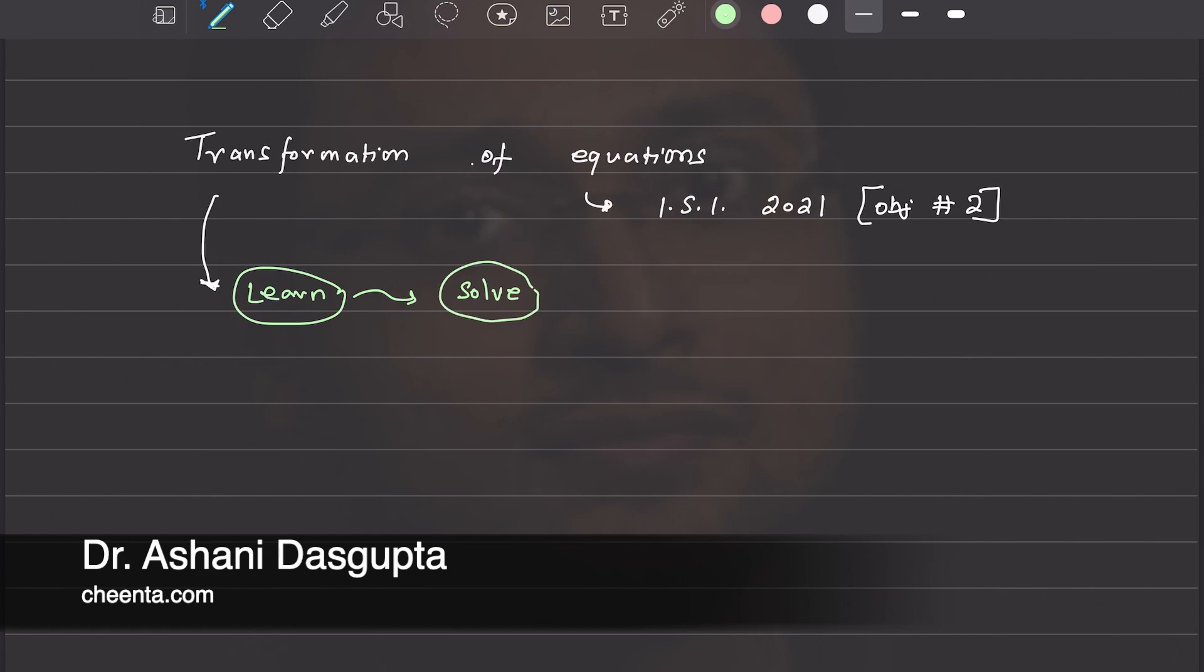If you are new to this channel, you can always click on the link in the description to access a free toolbox. This toolbox is useful for math olympiad, for ISI entrance, for college mathematics, and for research. You can also check out chinta.com for more resources.